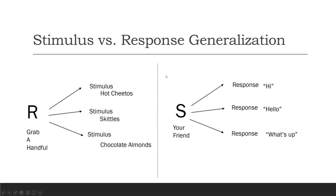Response generalization is kind of the reverse of that. You have a single stimulus — let's say your friend — and you display multiple responses in the presence of that stimulus, and in this case they're functionally equivalent. You can say hi, you can say hello, you can say what's up. So when you think response generalization, think multiple responses.